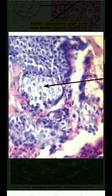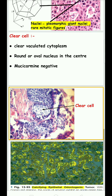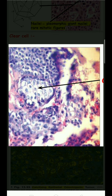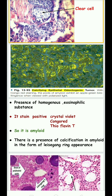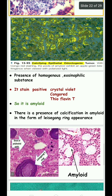To avoid confusion with mucoepidermoid carcinoma, we use mucicarmine stain, which is negative in CEOT. The clear cells have a round or oval centrally placed nucleus. There is also a presence of homogeneous eosinophilic substance.